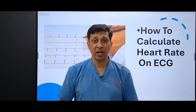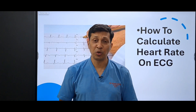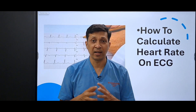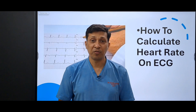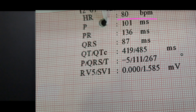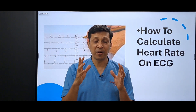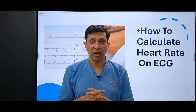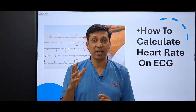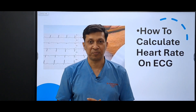A patient comes to the ER with palpitations, but you don't know how to calculate the heart rate and you inform the printed number on the ECG to your seniors. What if that number is wrong and you miss a very life-threatening arrhythmia because you trusted the machine?